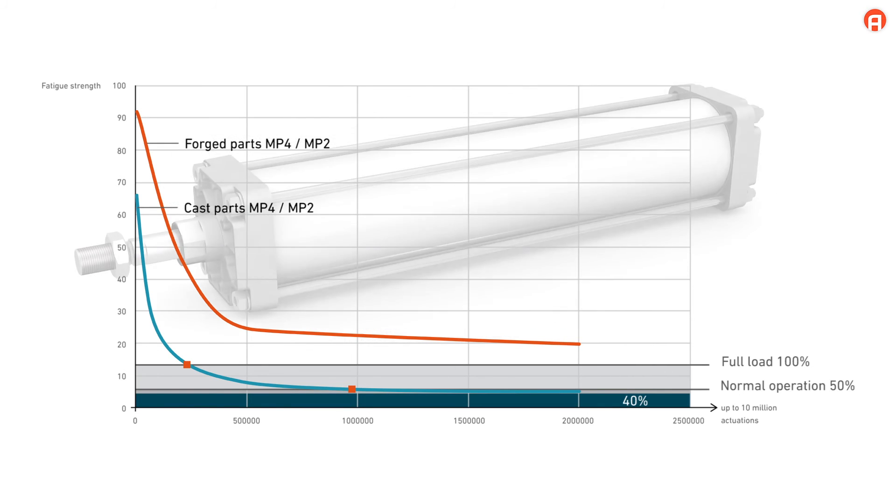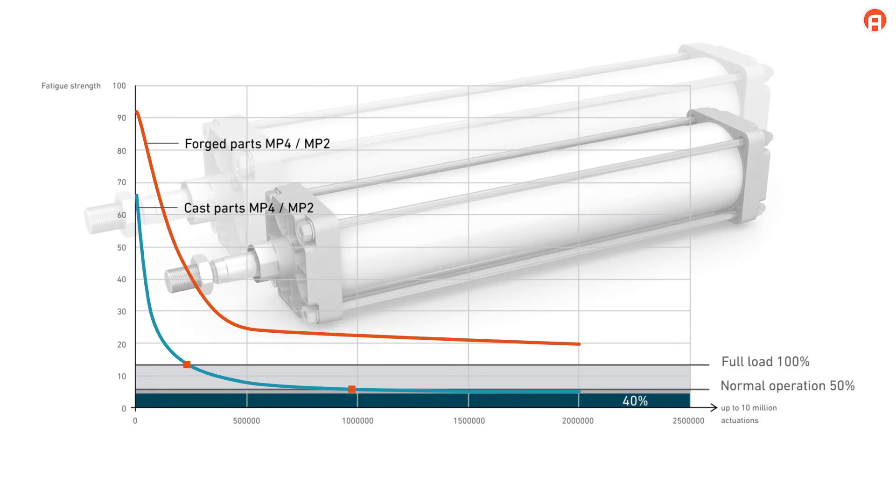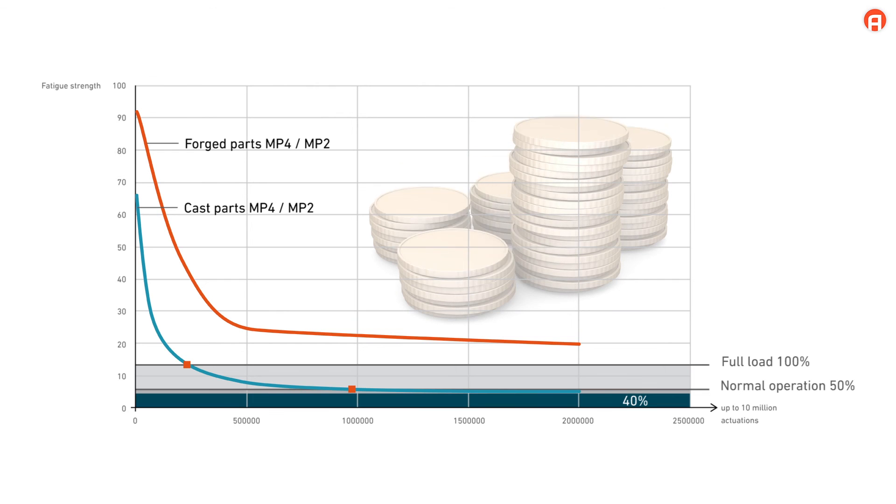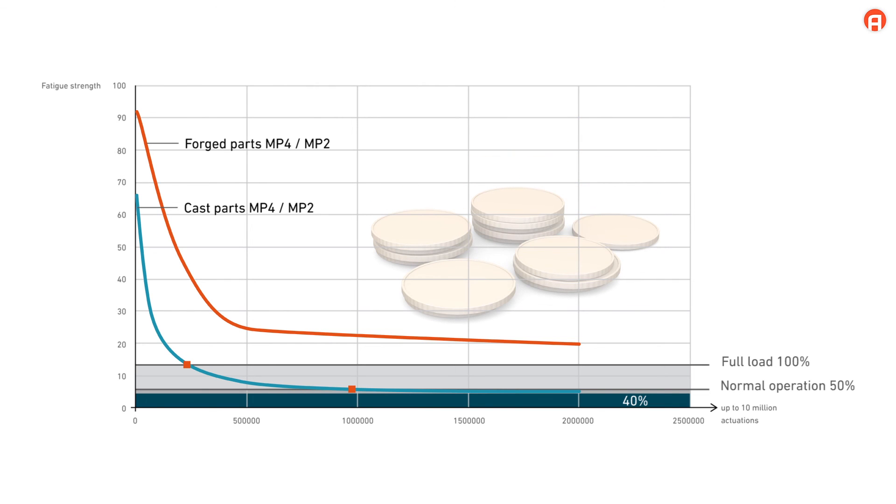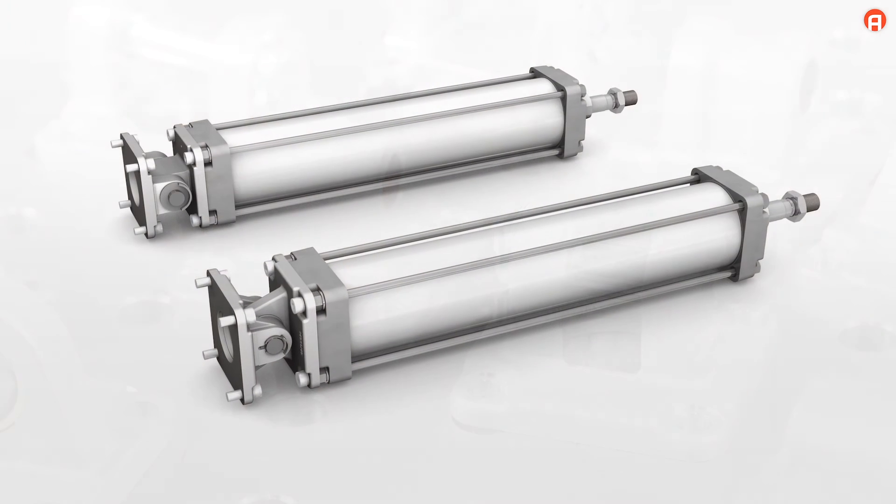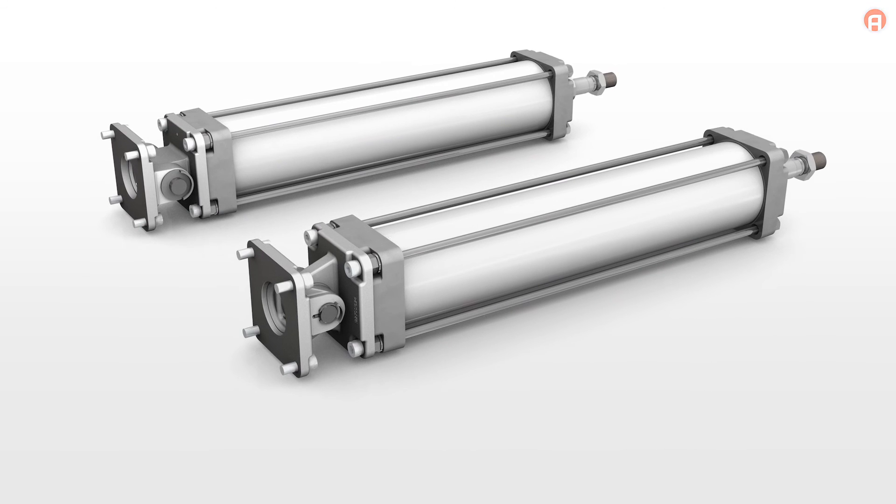To achieve an equivalent performance, you can use a cylinder up to two sizes smaller at Aventix. So you can save the bulk of the procurement and maintenance costs. Forged, not cast, Aventix cylinder mountings. Reliable and safe at a low cost.